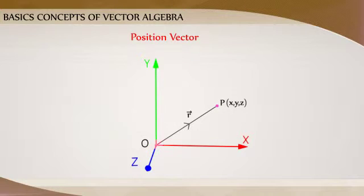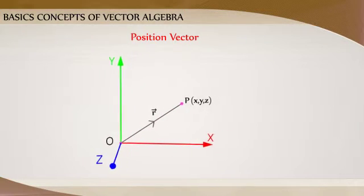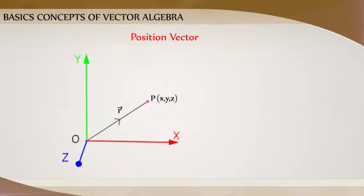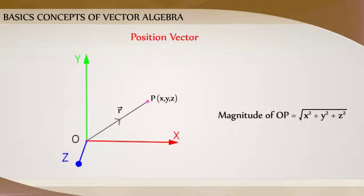The distance between these two points O and P gives the magnitude of the vector OP. Therefore, with the help of the distance formula, we get magnitude of OP equals root over x square plus y square plus z square.